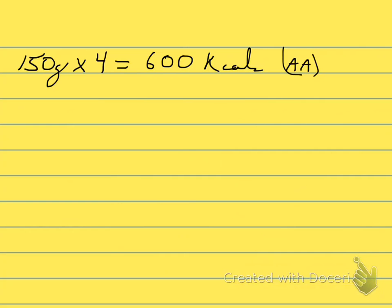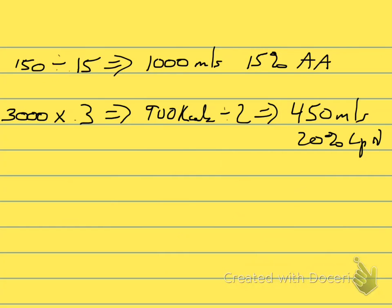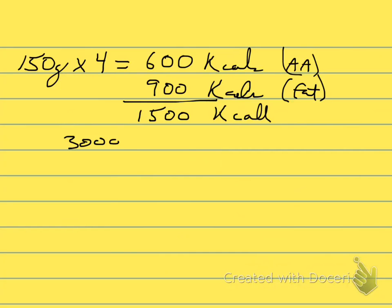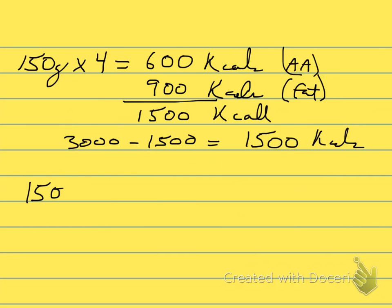So that's 600 calories from amino acids, and from the previous calculation we know we have 900 calories coming from fat. Adding those together gives us 1,500 calories accounted for. We know our total is 3,000 calories, so subtracting 1,500 leaves us with 1,500 calories that will need to come from dextrose. And dextrose provides 3.4 calories per gram.